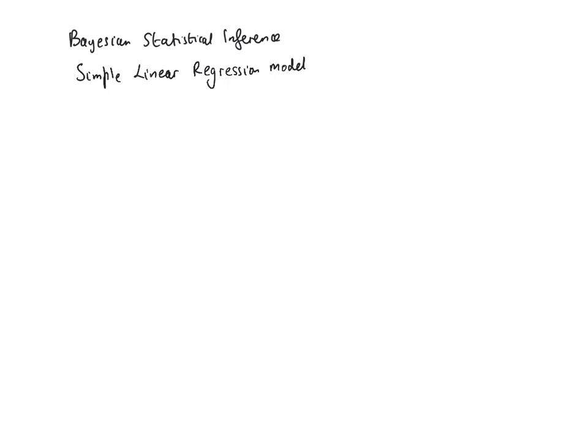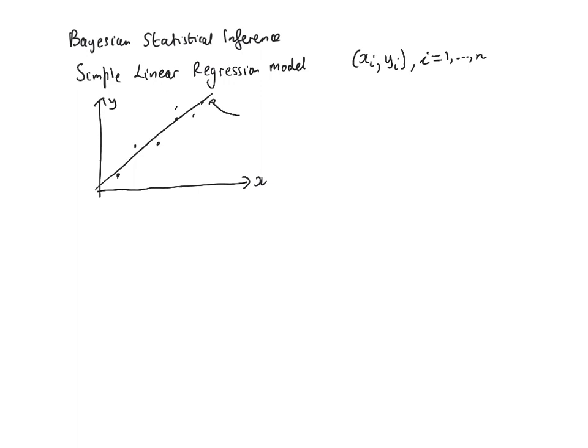To motivate this model I'm going to consider data — bivariate data, data pairs XI, YI — and I'm going to consider a sample size of N. We could plot data such as this using a scatter plot; any statistical package will allow you to do this, and this could be our data here. We could think that a straight line model could be a good model for those data.